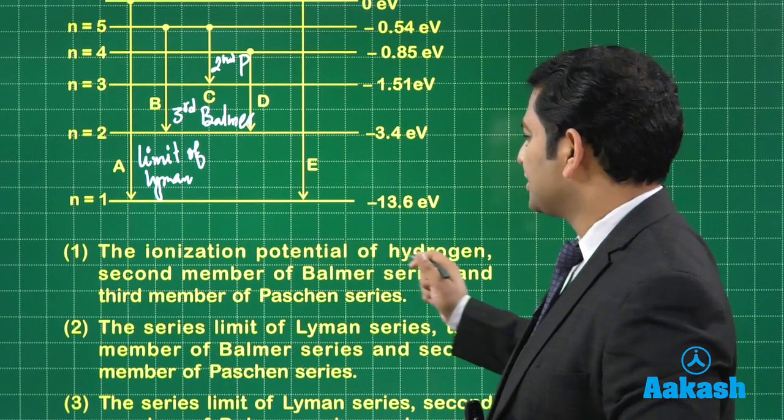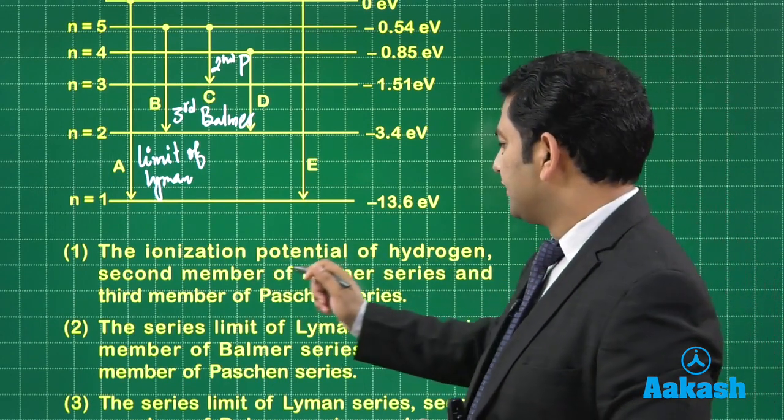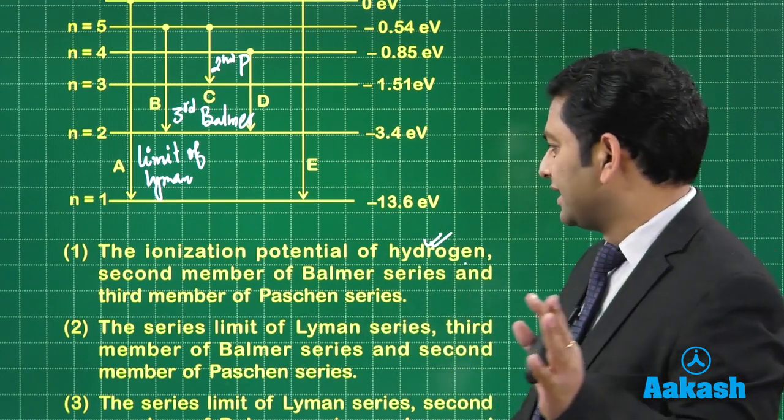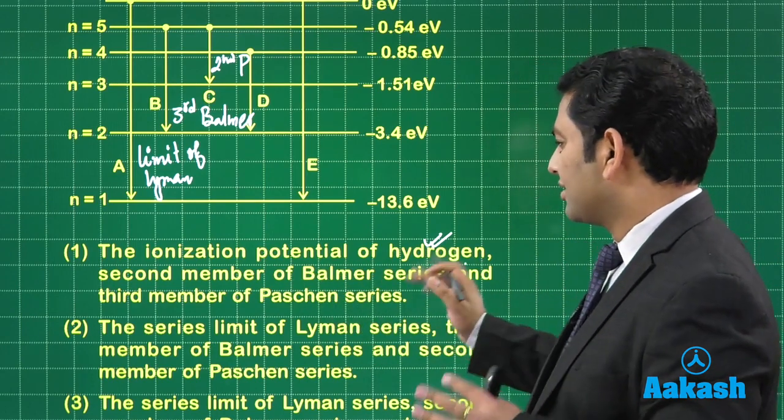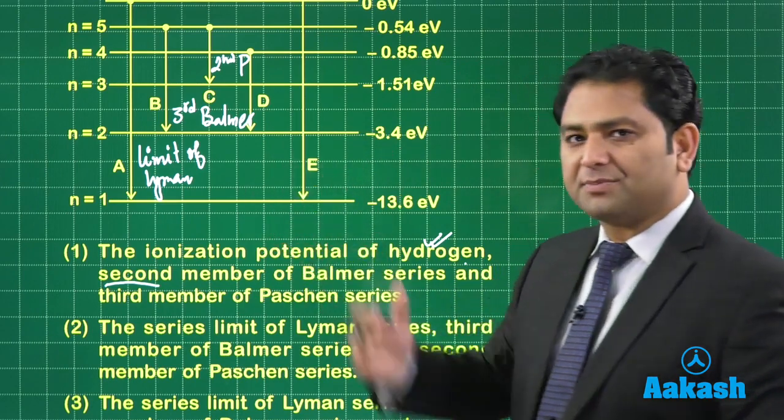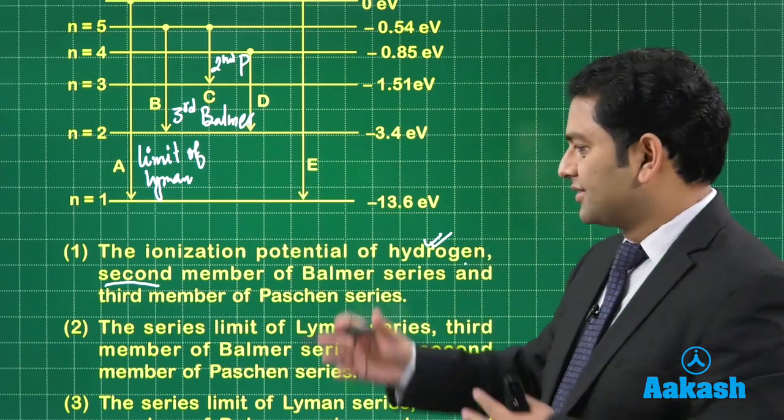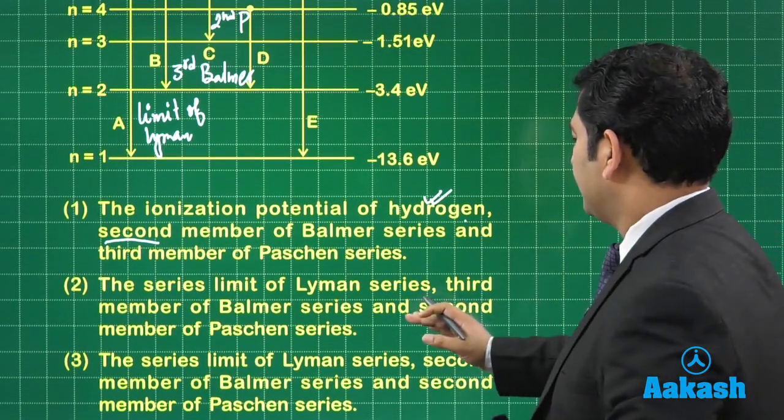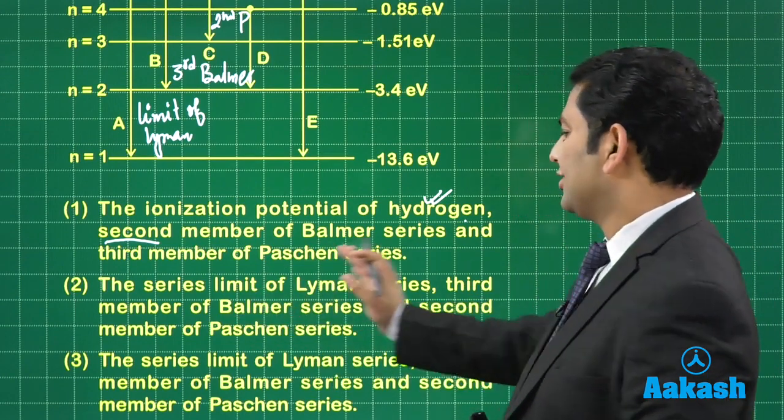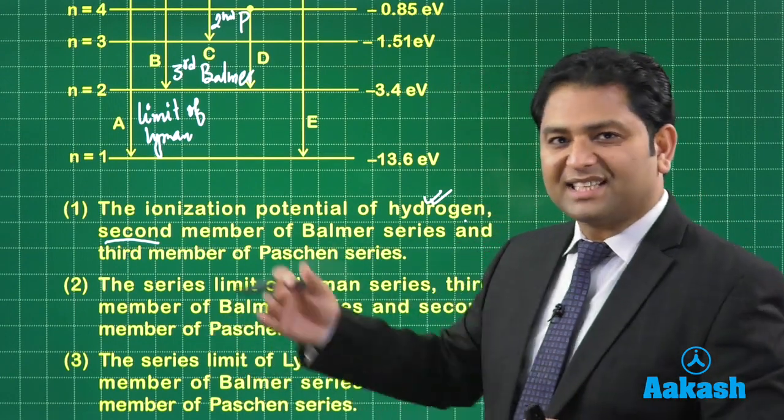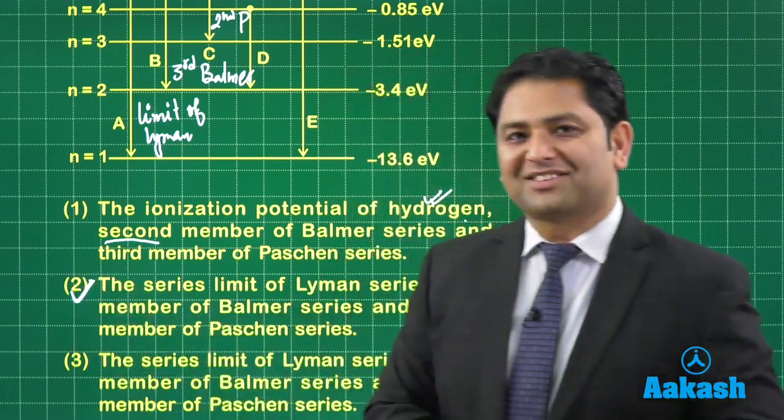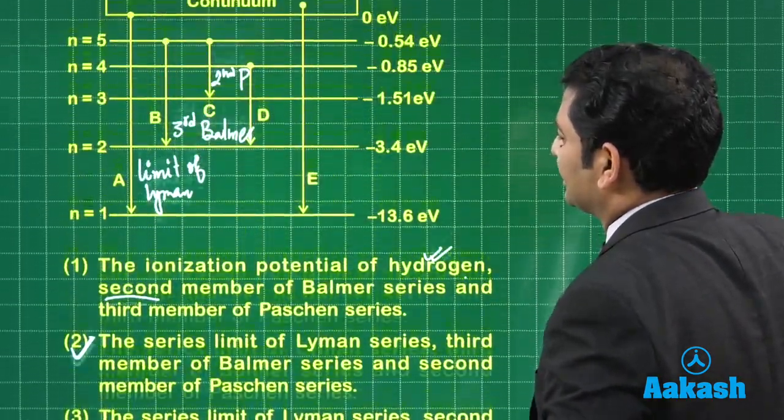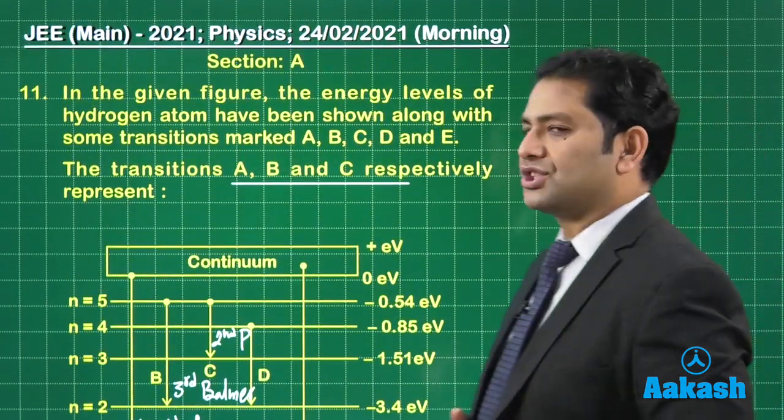The ionization potential of hydrogen. That's perfectly fine because the first one corresponds to it. So either you call limit of Lyman or ionization. That's fine. Second member of Balmer. No. This is mismatching because the B corresponds to the third member of Balmer. So that's gone. Let's see option number two. How about this? Series limit of Lyman, third of Balmer and second of Paschen. Oh. Lucky we. In the second option itself we found the correct match. All right. Lucky we. So there's no point proceeding further because we are talking about single option correct one. So that was question number 11.